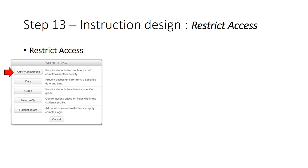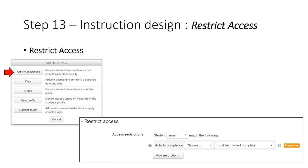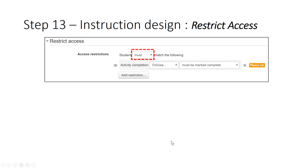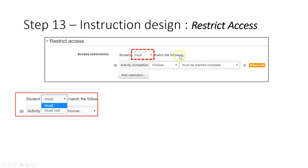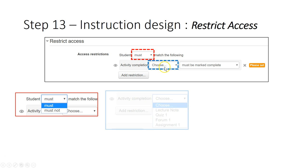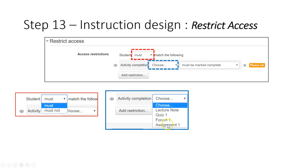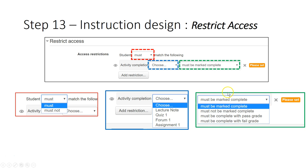When you click on activity completion, this is how it looks. It will allow you to set which activity needs to be completed. You will see a window where you can choose must or must not match the following condition. You choose activity completion and you can select the activities or resources — it will list out all the activities and resources in your course, so you just pick which one you want.